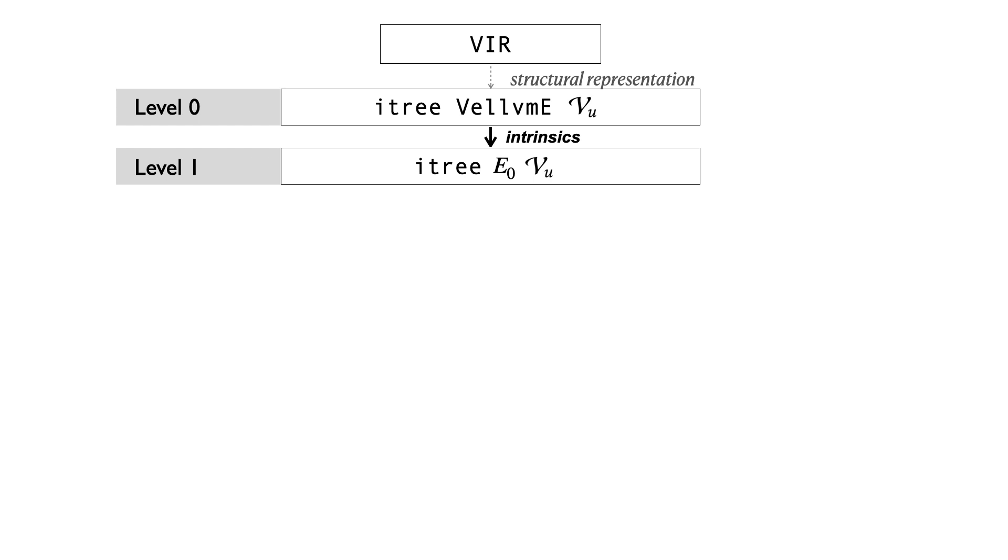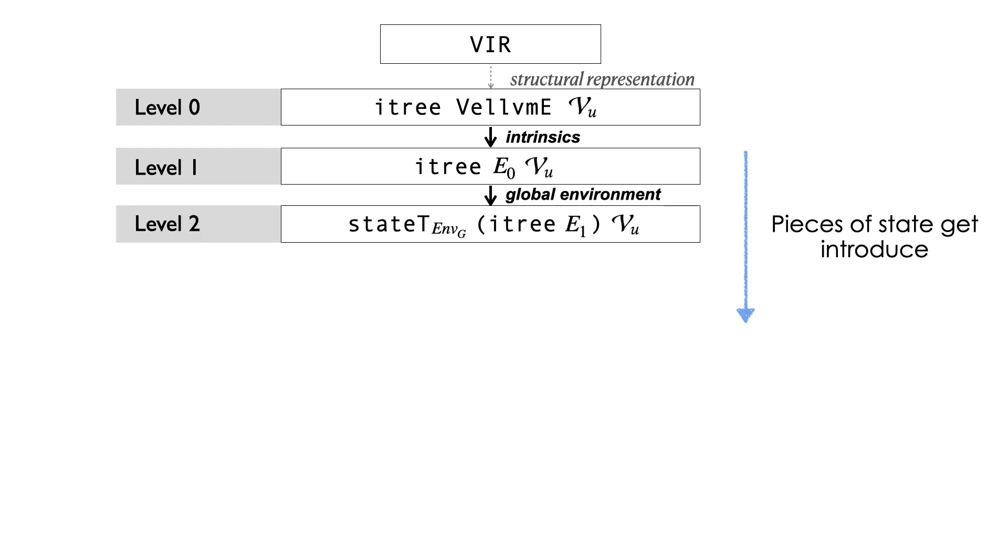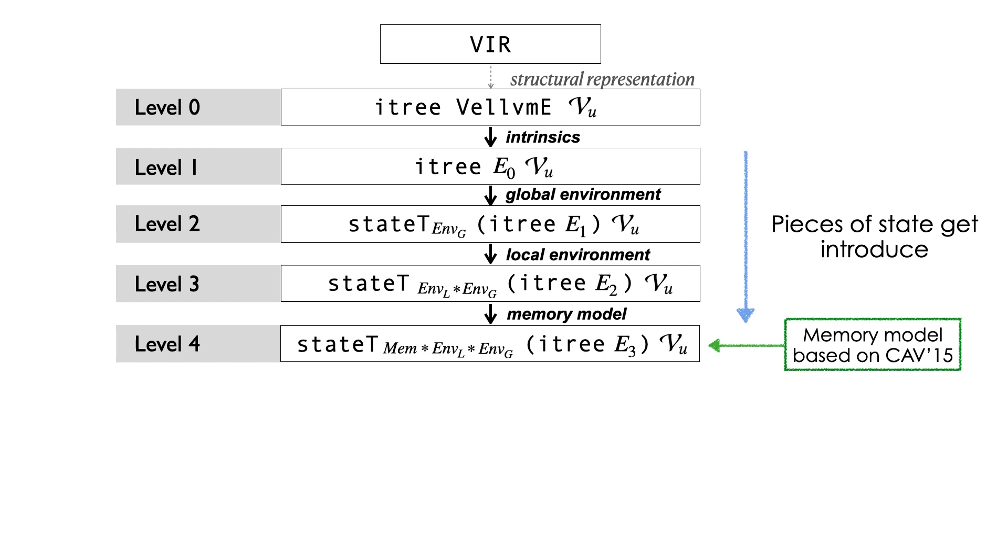First, you implement what is called intrinsic, a peculiarity of the language, and then you start introducing the pieces of state that you will manipulate. The global environment first, then the local environments, finally the memory model, and here you have a handler that is isolated that implements the whole memory model with respect to which reason.